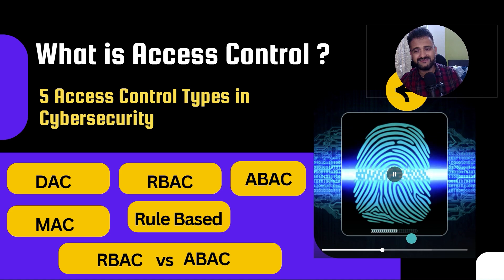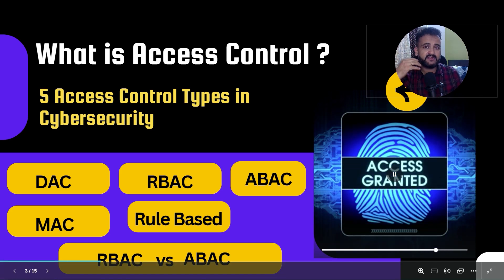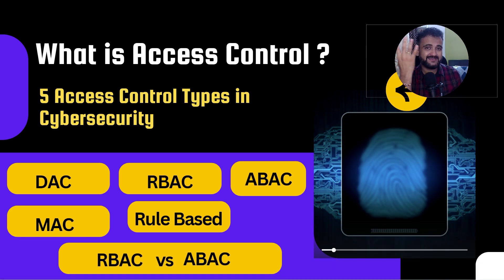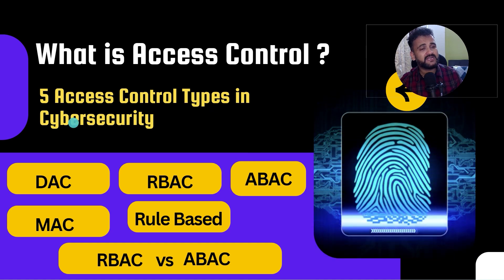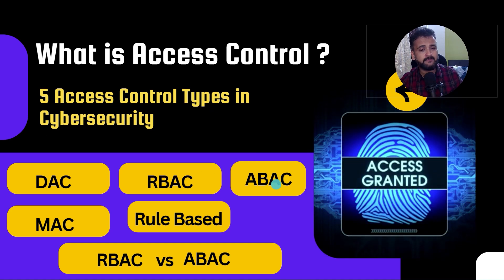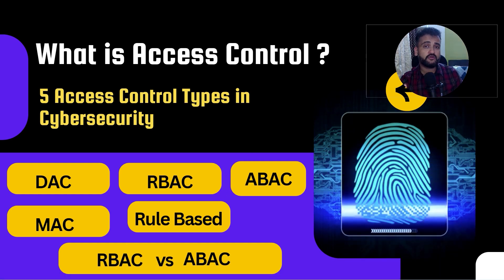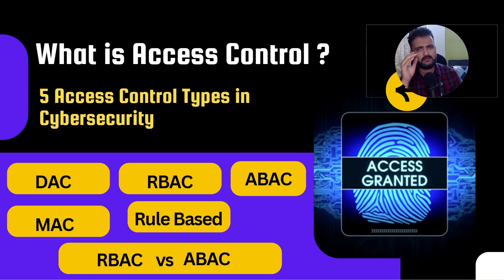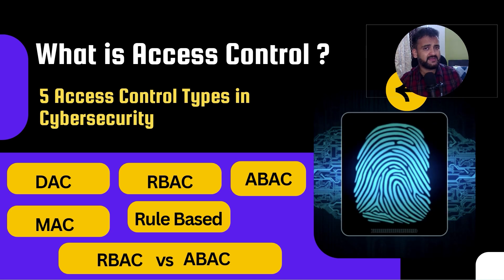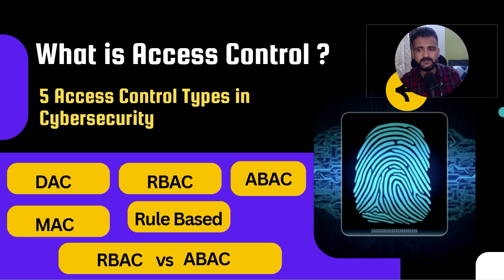Access control is all about identity — about proving who can access what. We'll cover five access control types: DAC, RBAC, ABAC, MAC, and rule-based. Then we'll end the video with the million dollar question: what is the difference between RBAC versus ABAC? A lot of people get this question during their security interviews.